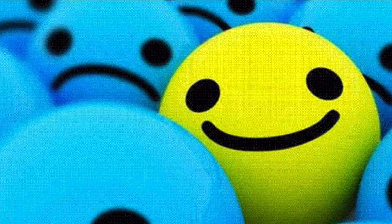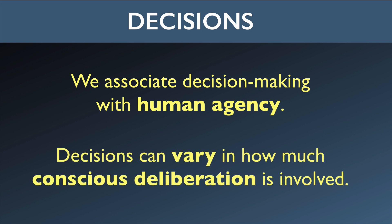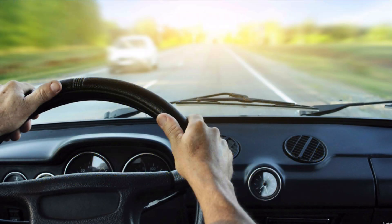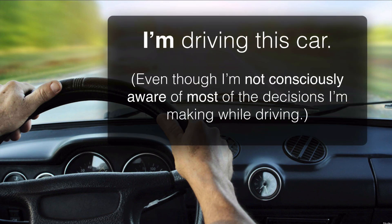I can decide to forgive you for some wrong you've done me. Some people talk about deciding to be happy or unhappy, though admittedly those are tougher cases to analyze. Another important point is that in everyday language we associate decision making with human agency, and we also grant that our decisions can vary in how much conscious deliberation is actually involved. I'm not consciously aware of many of the decisions I'm making when I'm driving a car — a lot of that is controlled by automatic subconscious processes. But I still want to say that I'm driving the car and controlling how it's being driven, even if I'm not consciously aware of all the processes making that possible.